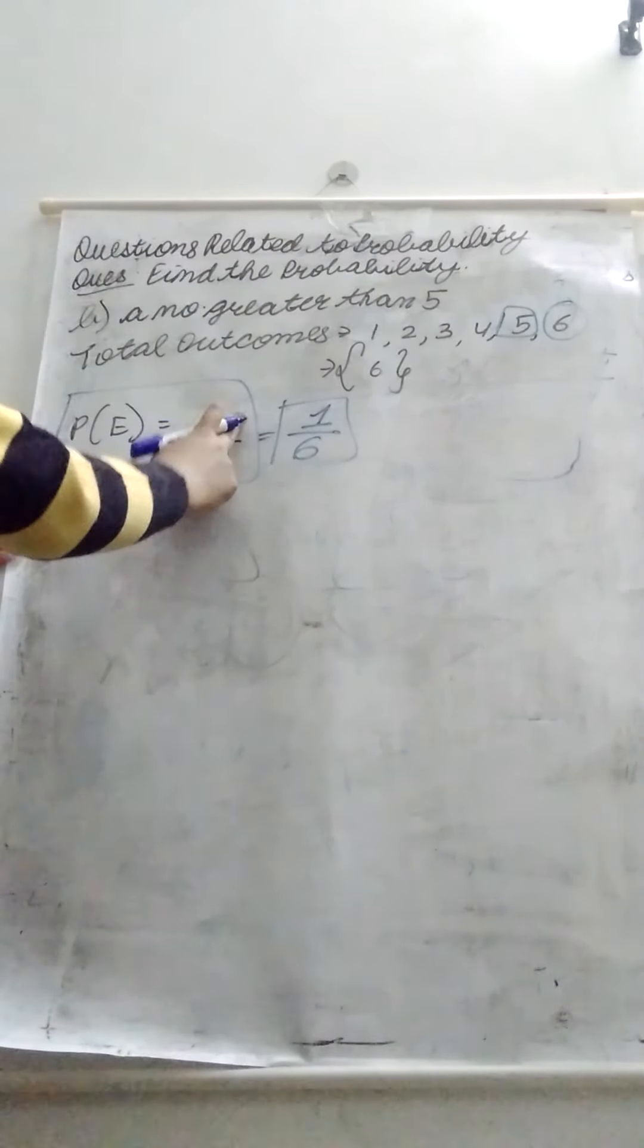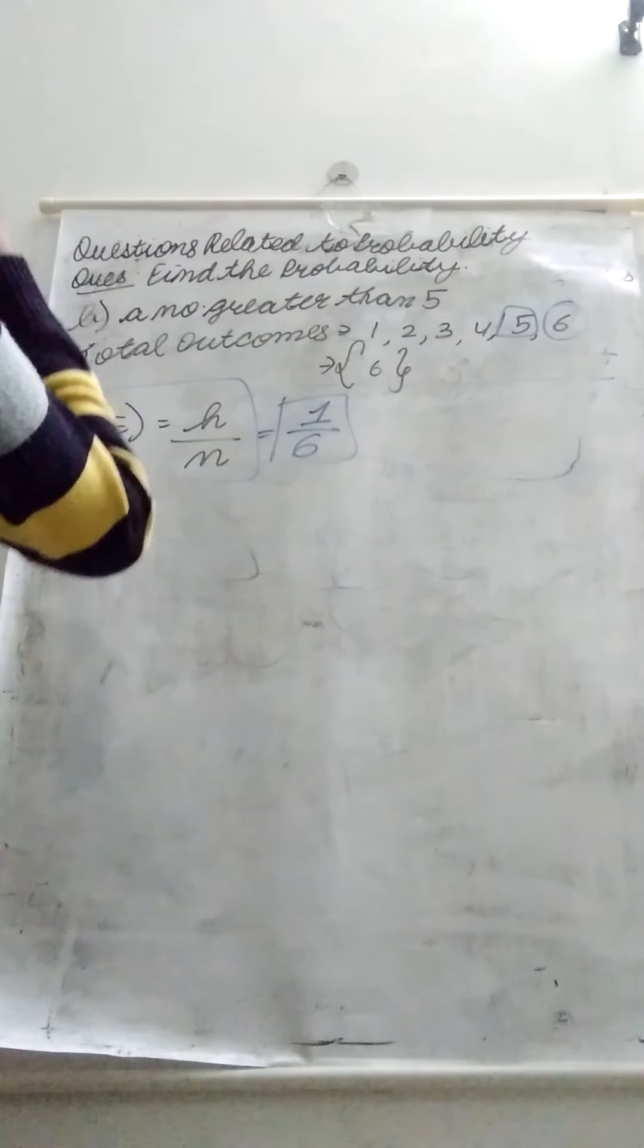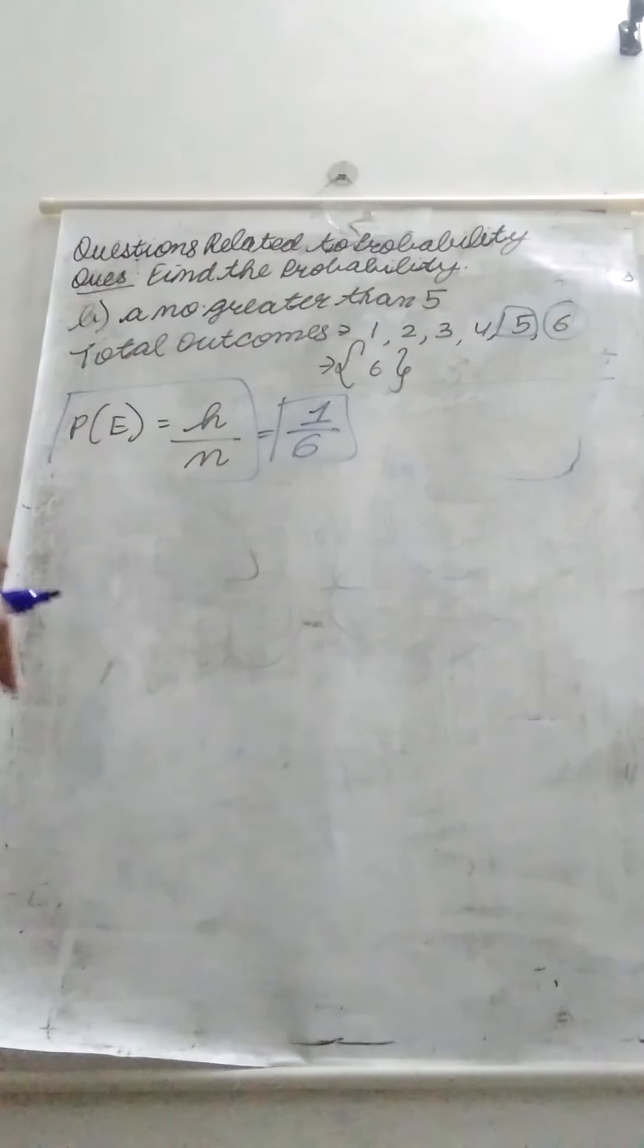Happening of the event is written as h and total number of outcome is written as n. So we can represent it in this form. Then you have to write all things very clearly in the questions.